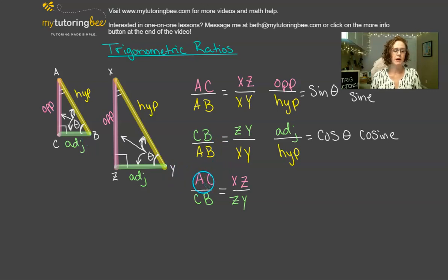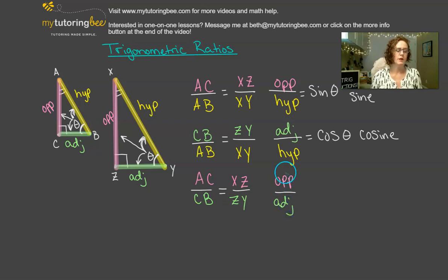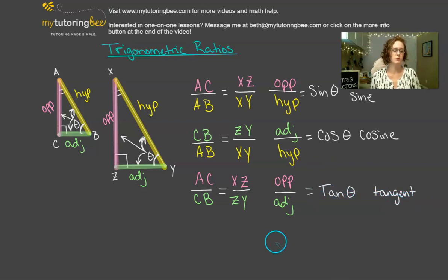And then when we're talking about opposite over adjacent, we call this relationship or this ratio tangent — tangent of theta. TAN is just the abbreviation. We'll talk more about their relationship to one another in another video.